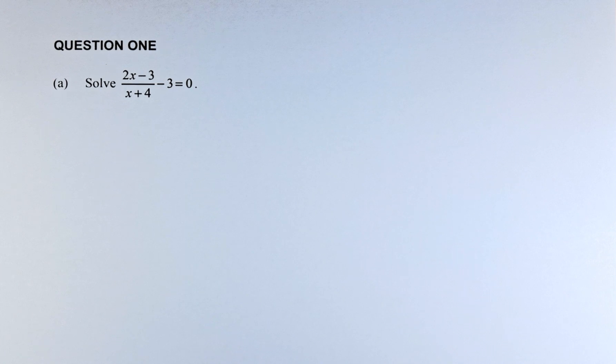The question is: solve (2x - 3)/(x + 4) - 3 = 0. This is quite a straightforward question and this is an achieved question. If you can do that, then you get an A2 for this question.